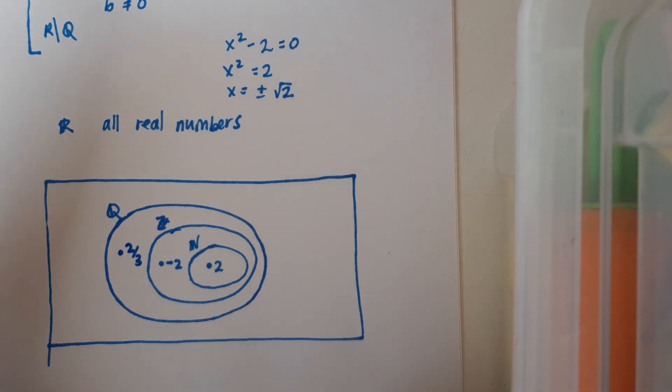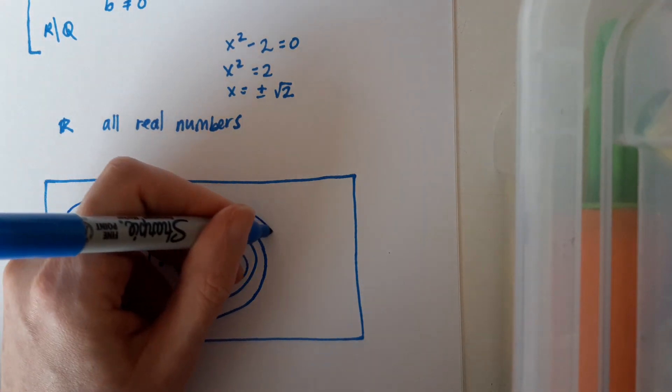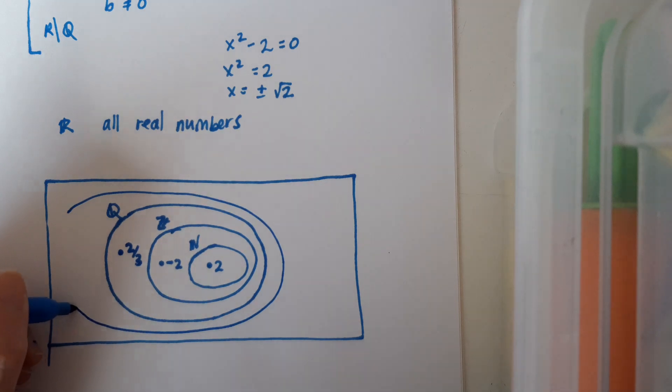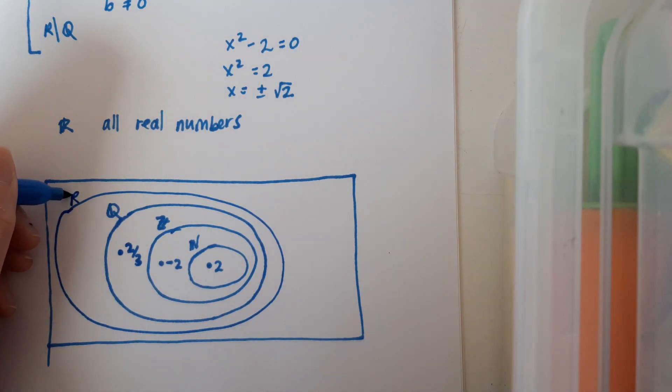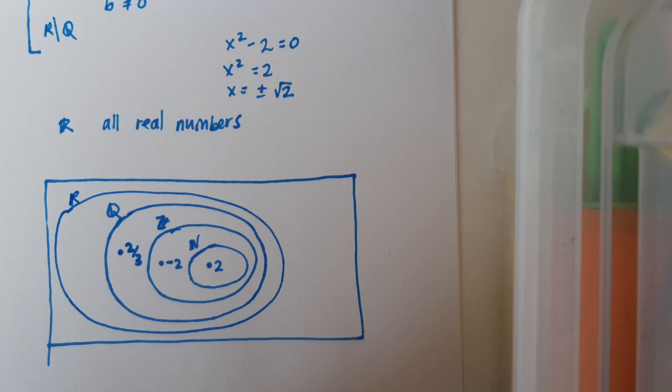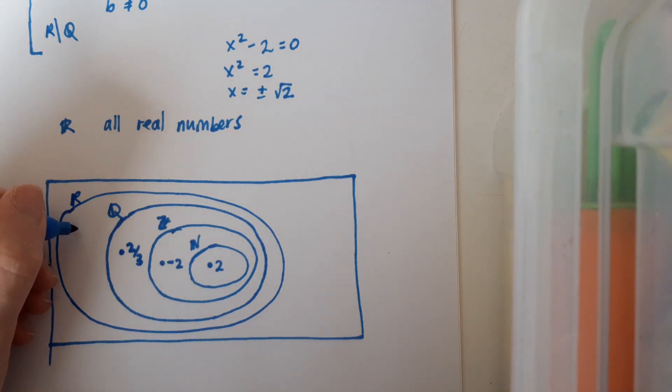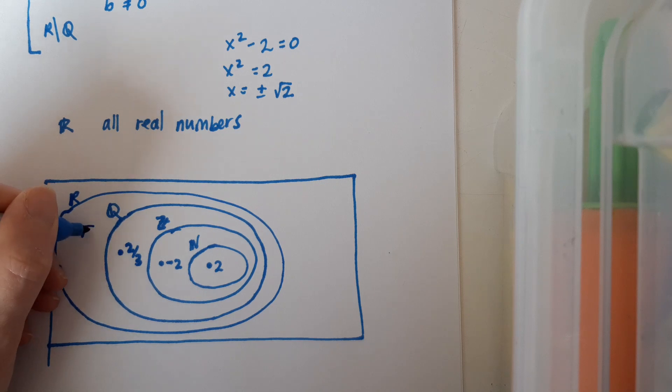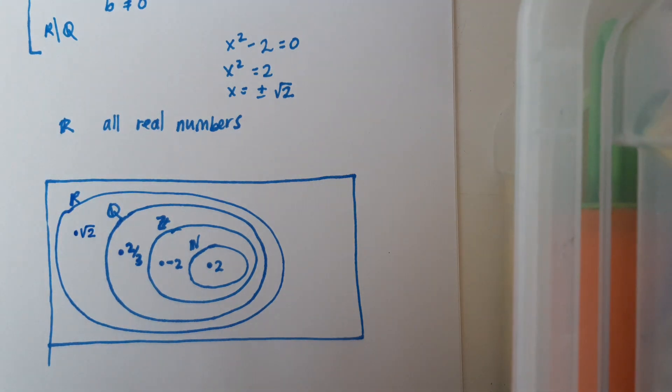And then expanding out again, we've got our real numbers. And real numbers contain all the previous sets and of course then they also contain things like root 2, which are our surds.